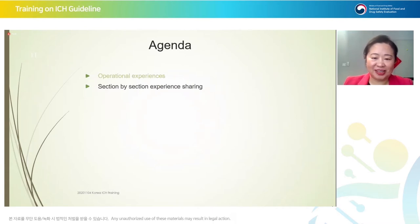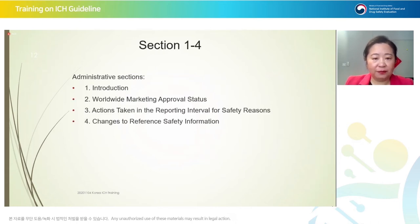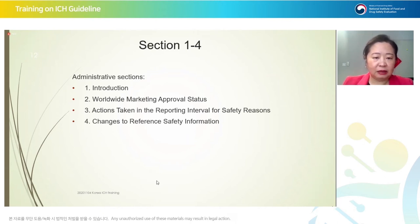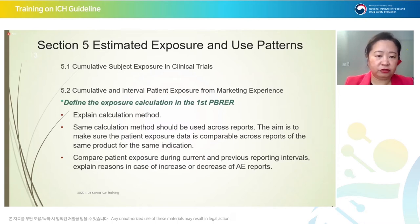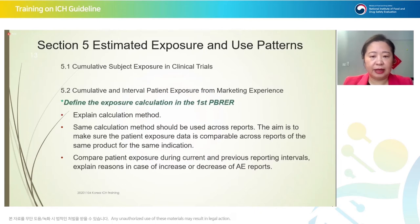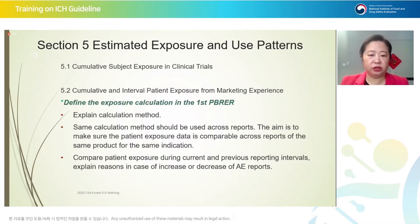Sections 1 to 4 are administrative sections. The main contributing function is regulatory. I'm not going to spend too much time on these sections. Section 5 discusses estimated exposure and use patterns, divided into two parts: exposure in clinical trials and exposure from postmarketing experience. For clinical trials, the guideline gives very clear guidance and the exposure data are easy to obtain from the CRM database — you extract the data according to the templates.